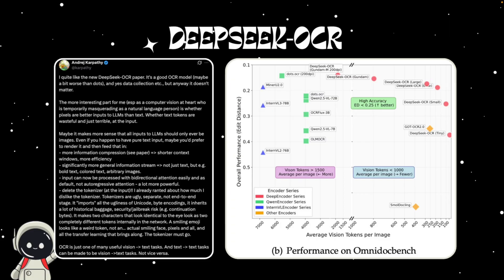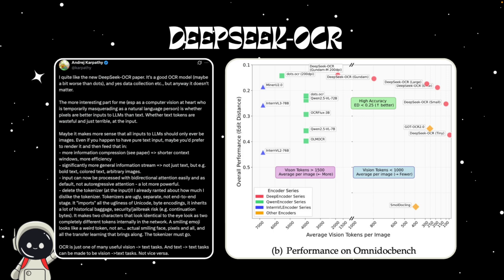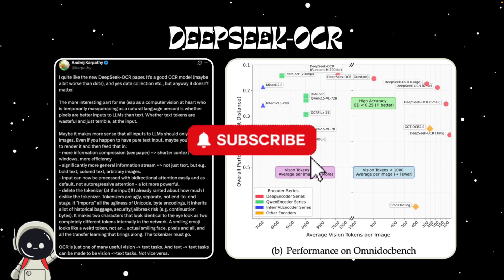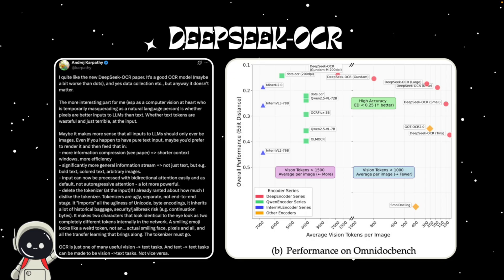That means agents that can remember longer conversations, read entire books, or process multimodal documents without massive compute costs. DeepSeek already does this in practice, processing hundreds of thousands of pages per day on a single GPU, completely open source. So instead of making models remember more, DeepSeek shows how to make them remember smarter — a small but brilliant shift, and maybe the first step towards AI that truly thinks like us.